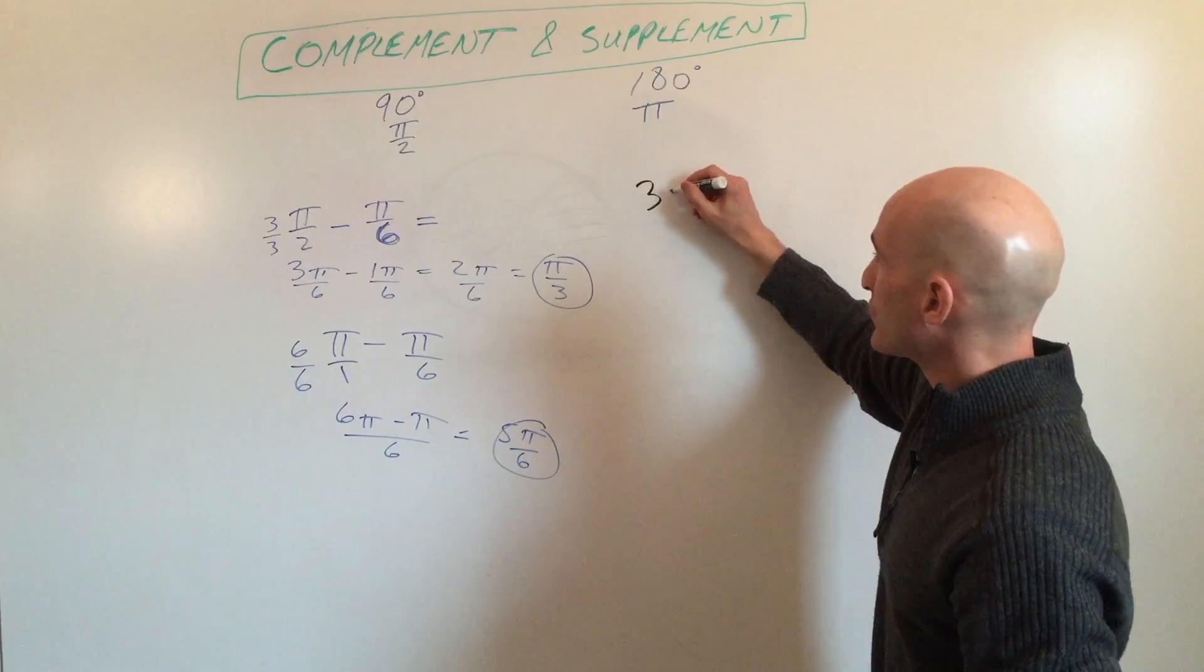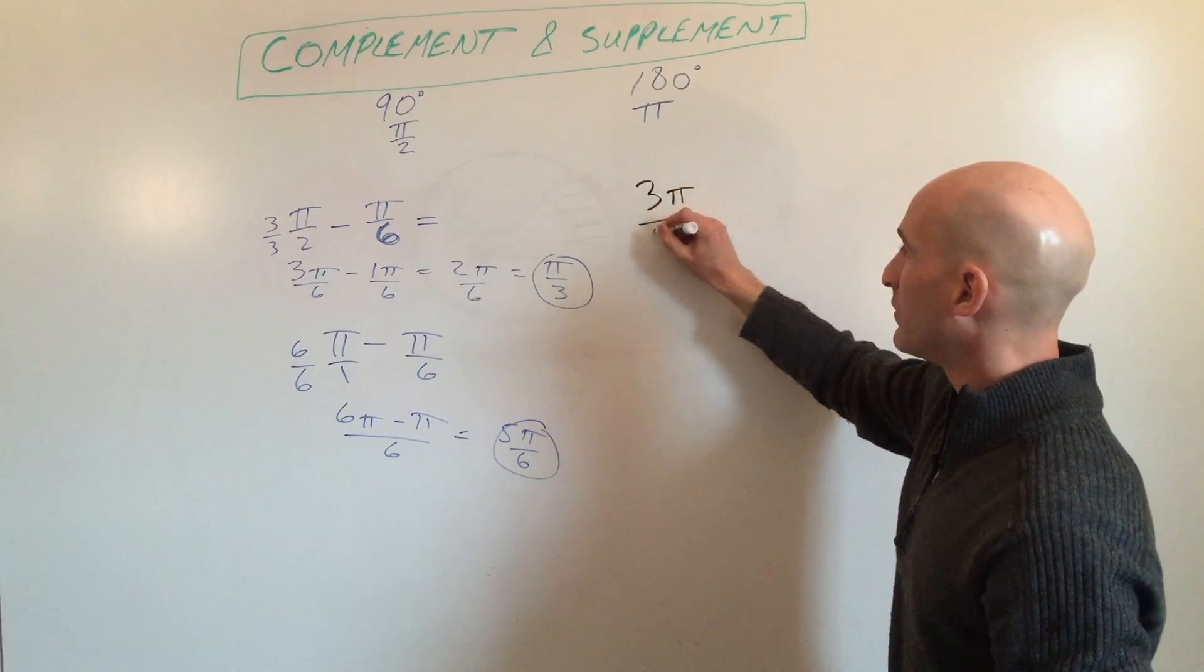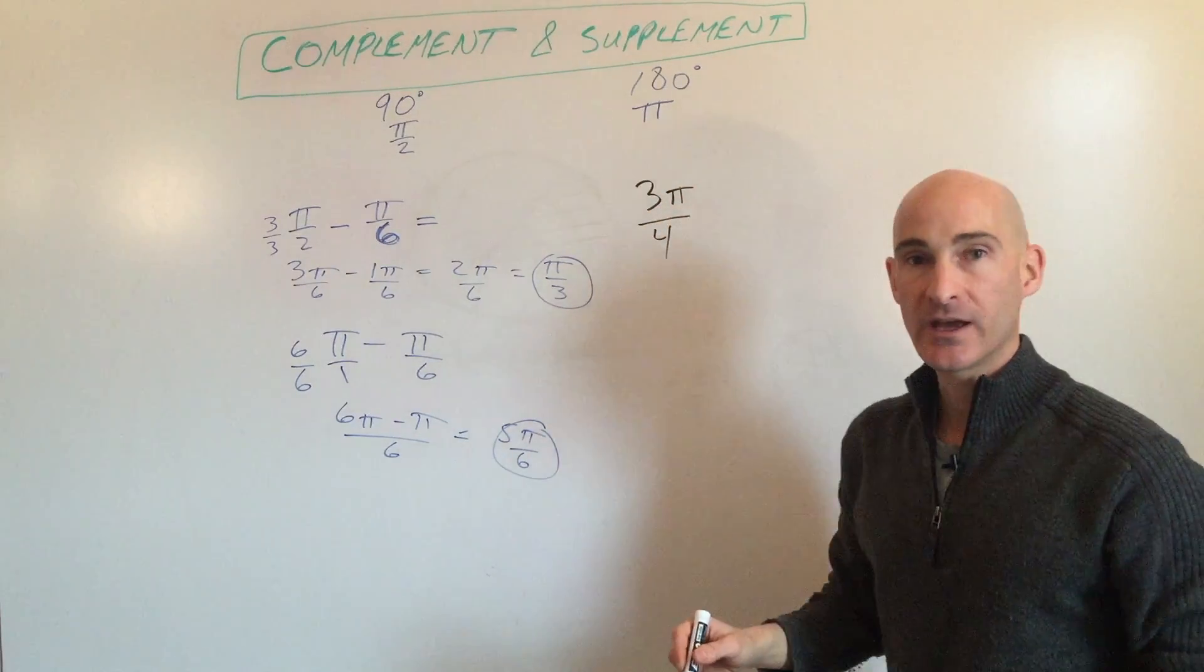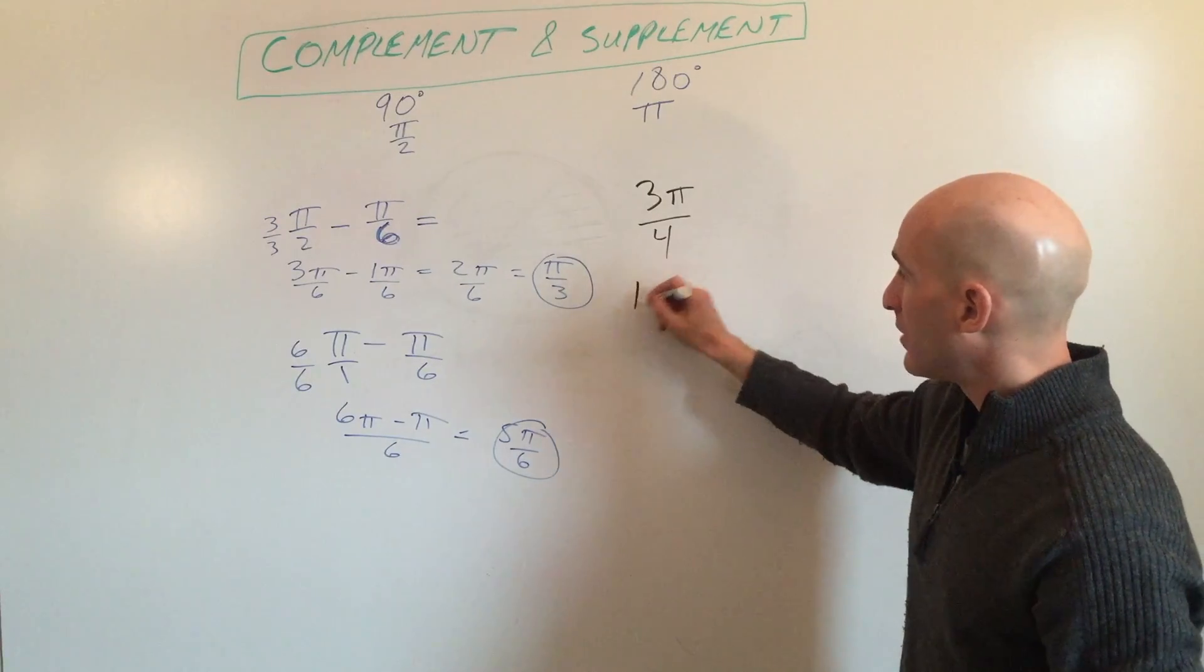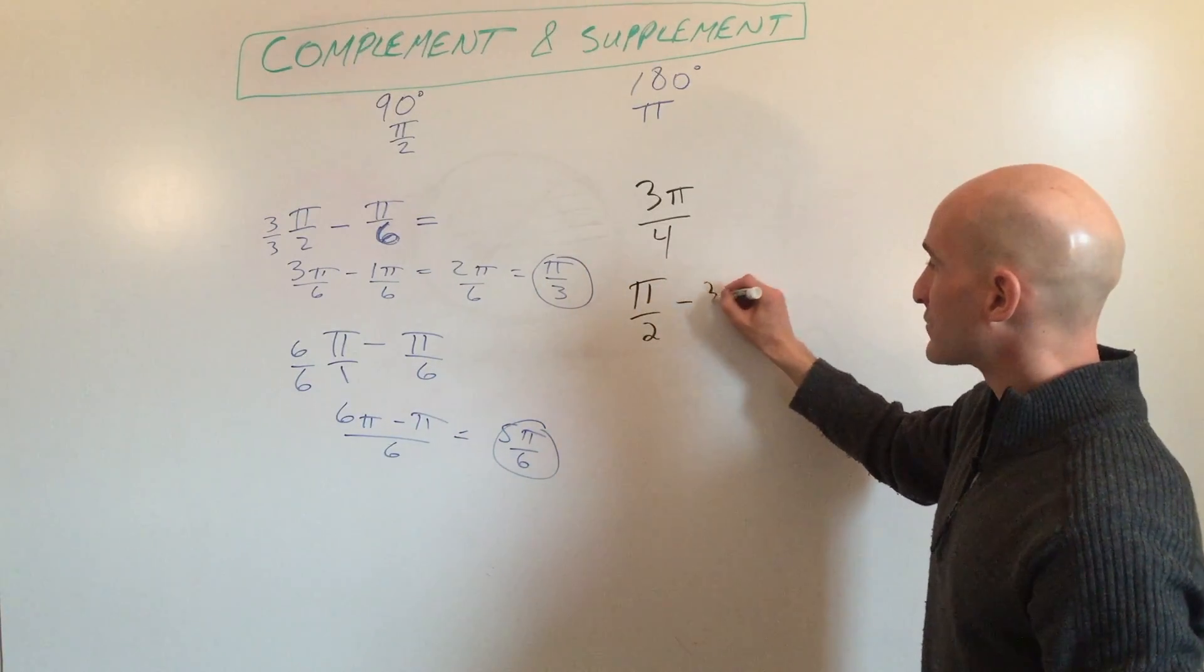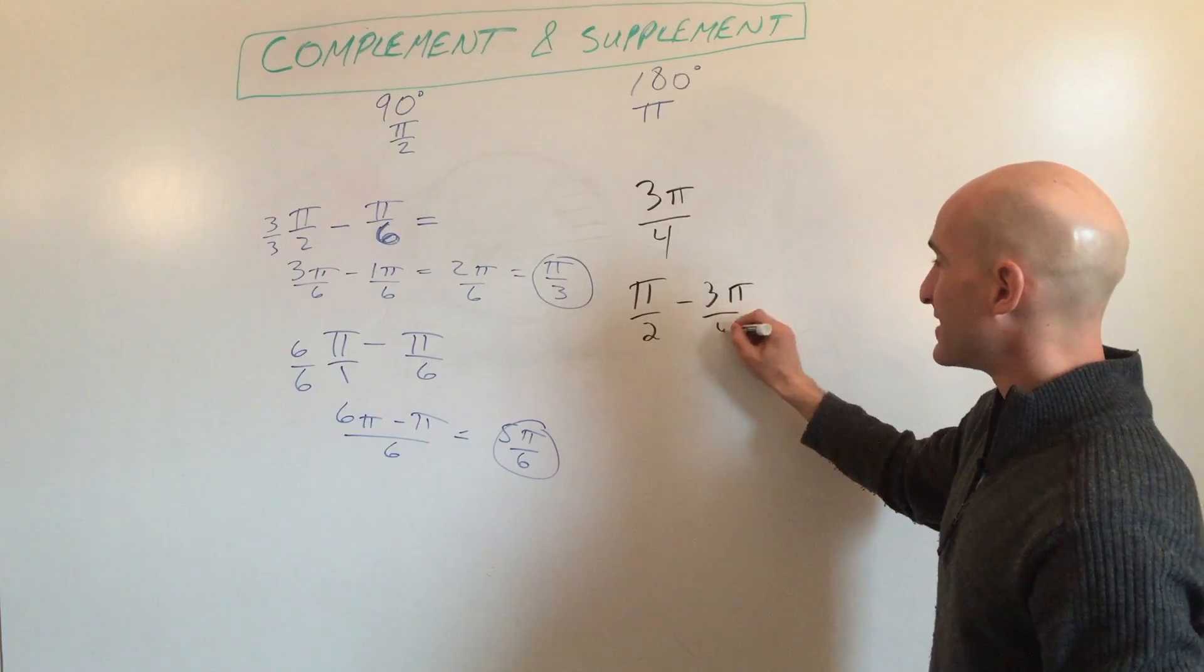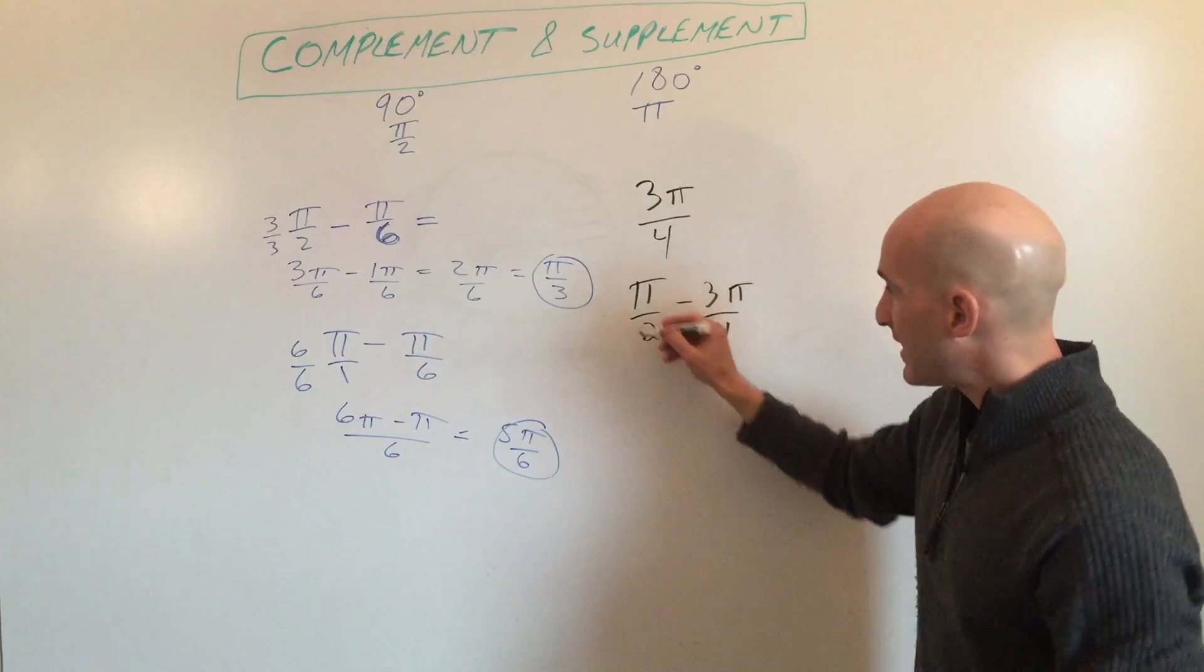Let's say that your angle is 3π over 4. So if we try to do π over 2 minus 3π over 4, you might not notice this initially, but when we get common denominators,